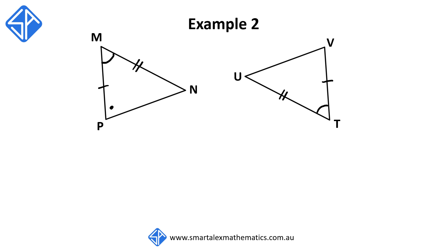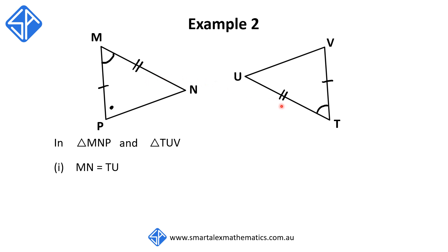In our second example, we've got two triangles: triangle MNP and triangle TUV. We begin with the introduction: in triangle MNP and triangle TUV, making sure that the order of the vertices correspond to each other. The first reason: MN is equal to TU — marked on the diagram, so given. The second reason: MP is equal to TV — these two sides are marked with one dash, so given.